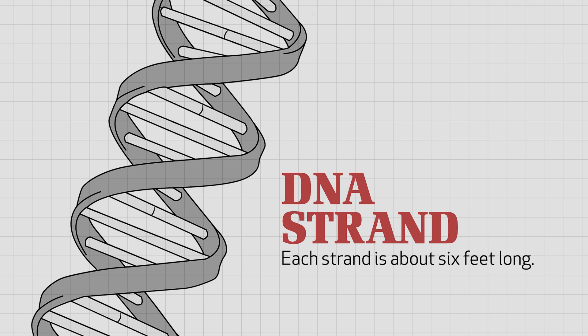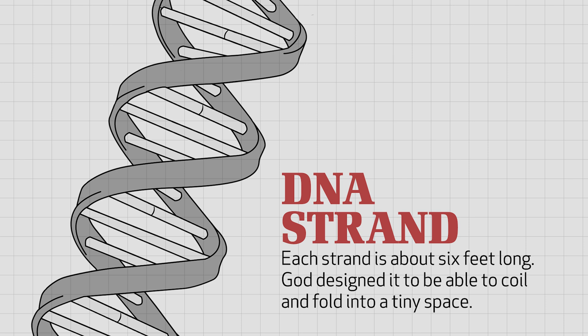How does a six-foot-long strand of DNA fit inside each one of your tiny cells? God designed DNA to be able to coil and fold into a tiny space. Imagine an electrical cord that is 100 feet long, then think about looping that electrical cord so that it curls up in a roll about the size of a trash can lid. Then imagine that you have several of those looped cords stacked on top of each other. That gives you an idea of how DNA coils.